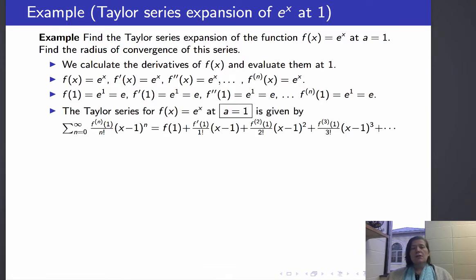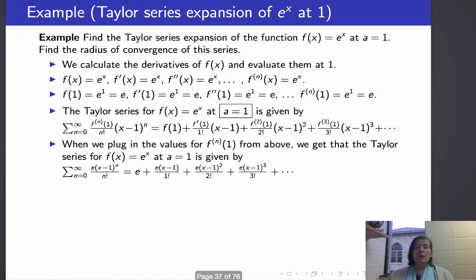So now the Taylor series for f at a equals 1 is given by the sum from 0 to infinity of the nth derivative at 1 over n factorial times x minus 1 to the n. So this is f of 1 plus f prime of 1 times x minus 1 plus the second derivative at 1 over 2 factorial times x minus 1 squared, etc. And when I plug in e for the nth derivative at 1, I get that this is equal to e plus e times x minus 1 over 1 factorial plus e times x minus 1 squared over 2 factorial, etc.